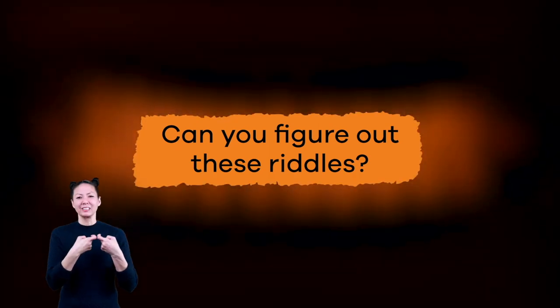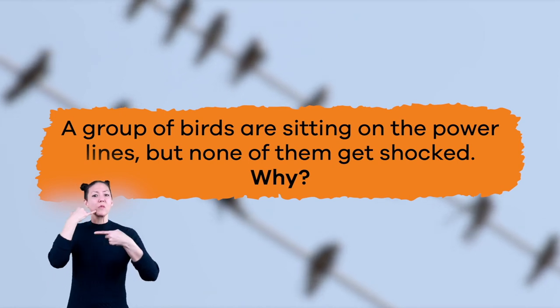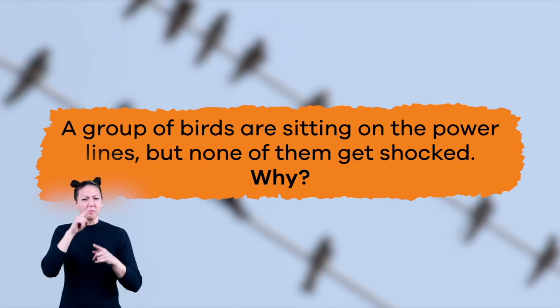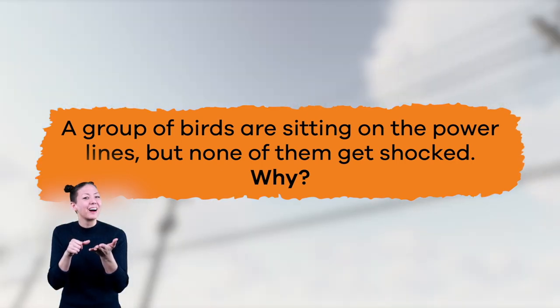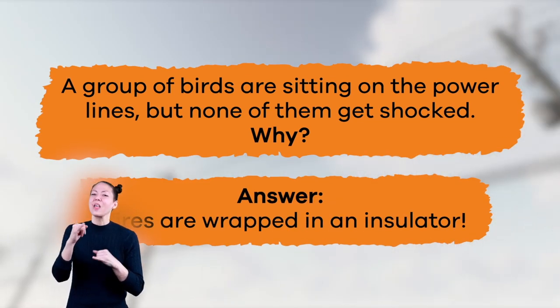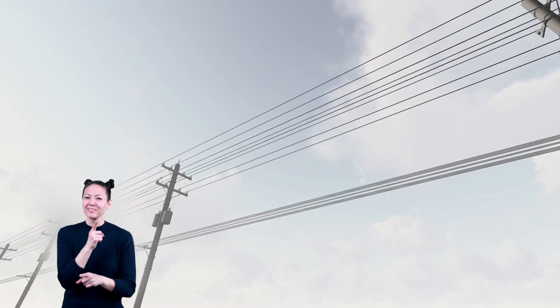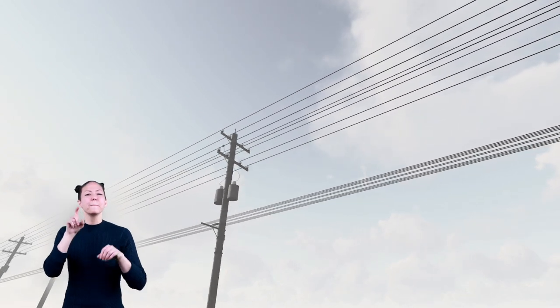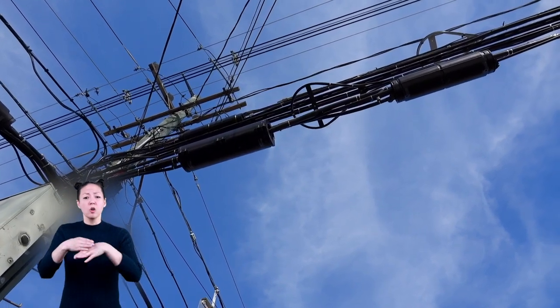A group of birds are sitting on the power lines near your home, but none of them get shocked. Why? If you said it's because those wires are wrapped in an insulator, you're correct! Insulators, like plastic and rubber, prevent the flow of electricity. But even though they are wrapped, those wires still aren't safe to touch. If you ever see one down on the ground, don't touch it and get a grown-up!